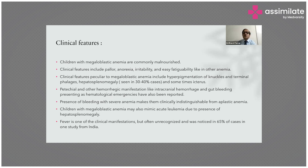Clinical features of megaloblastic anemia: children are commonly malnourished. Clinical features include pallor, anorexia, irritability, and easy fatigability. Features peculiar to megaloblastic anemia include hyperpigmentation of the knuckles and terminal phalanges.